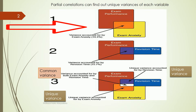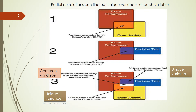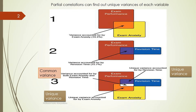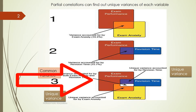In this example, the variance accounted for by exam anxiety is 19.2. We can then take revision time as a separate variable and examine the variance accounted for by revision time — in this example it is 15.2. We can bring both variables together and look at the outcome, exam performance.